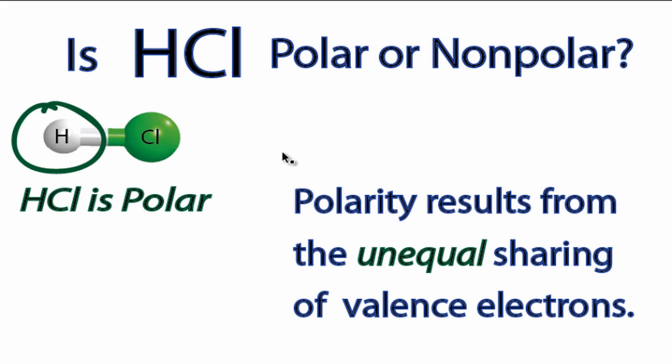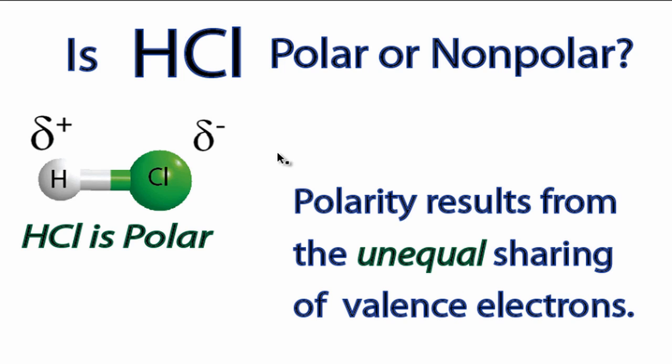So we can show that by putting a delta symbol, delta negative, around the chlorine, delta positive around the hydrogen. And that shows that there is a bit of polarity there and that the chlorine has the electrons much longer than the hydrogen.